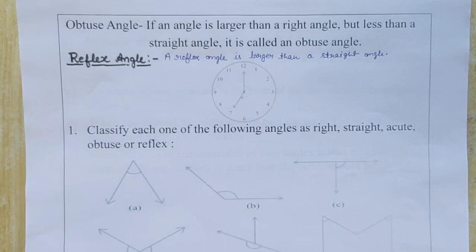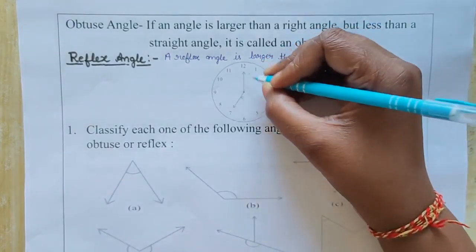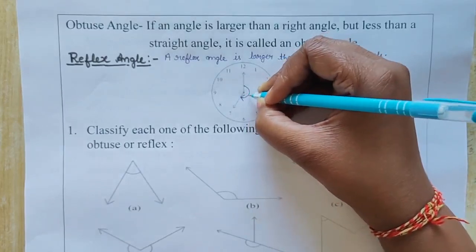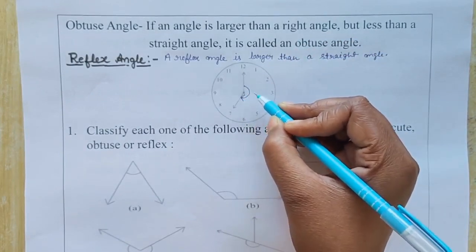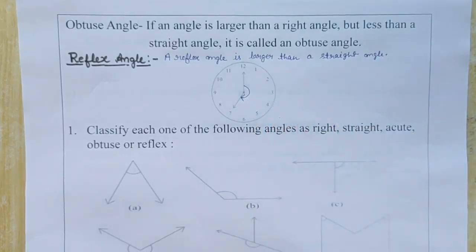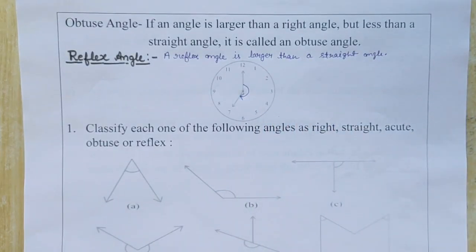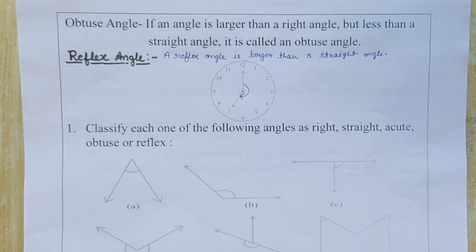A reflex angle is larger than a straight angle, meaning greater than 180 degrees. For example, the angle formed between 12 and 7 on a clock is greater than 180 degrees — that's why it is an example of a reflex angle. So: acute angle is 0°–90°, right angle is exactly 90°, obtuse angle is 90°–180°, straight angle is 180°, and reflex angle is greater than 180°.